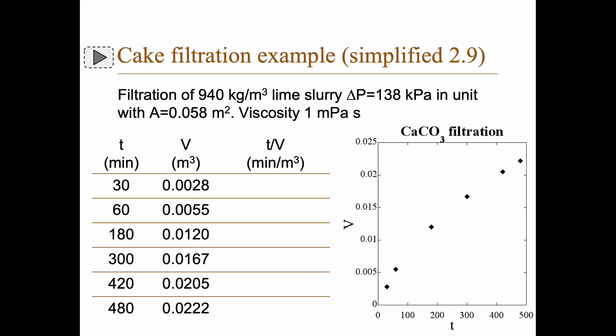You see t here in minutes and V in cubic meters. They filtrated 940 kilogram per cubic meter lime slurry at the pressure 138 kilopascal in a unit with an area of 0.058 square meters, and the viscosity was one millipascal second.